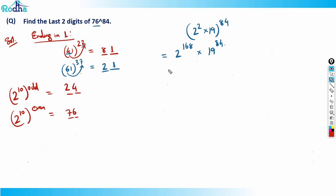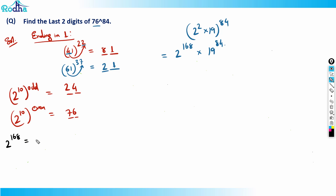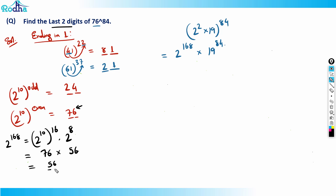For 2 raised to 168, I can write it as 2 raised to 10 into an even number — that is 160 — plus 8 remaining. So 2 raised to 10 to an even power always ends in 76, and 2 raised to 8 is 256, so its last two digits are 56. Therefore, 76 into 56 ends in 56.